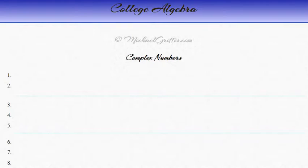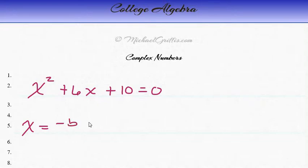Okay, let's take a look at this problem here. We've got x squared plus 6x plus 10 is equal to zero. So we remember the quadratic formula is negative b plus or minus.